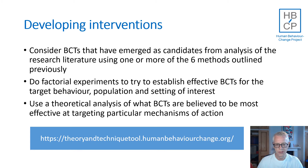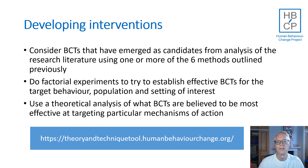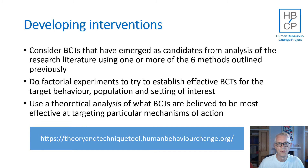When developing interventions, you can search the literature for studies using any of the six methods just described. You can undertake your own meta-analysis, meta-regression or meta-CART using studies in the literature, but bear in mind that journal articles typically report only a fraction of the BCTs actually used, so you should go to intervention manuals for a more accurate picture. Or you can undertake your own experimental studies if feasible — for example, a factorial design experiment to assess the impact of several BCTs at once.